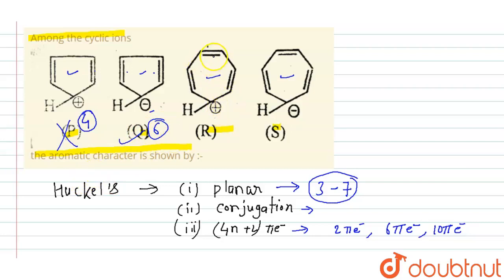Now coming to R: 2 plus 2 plus 2, that's 6. So this will also show aromatic character. For S: 2 plus 2 plus 2 plus 2, that is 8 pi electrons. So it will not show aromatic character.